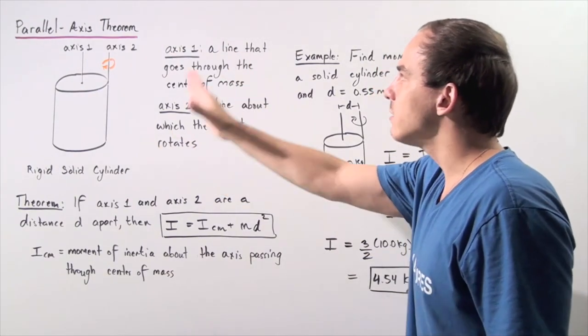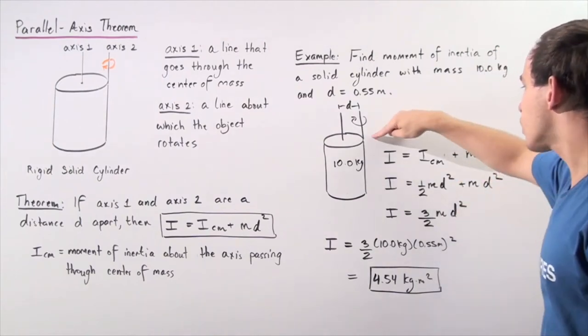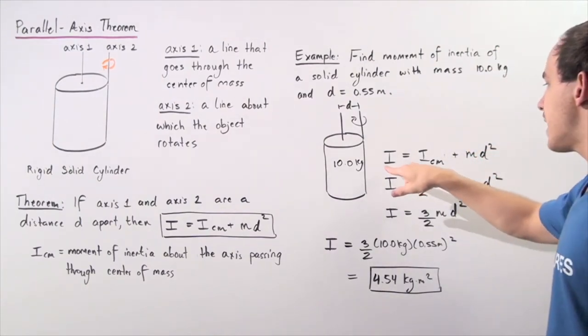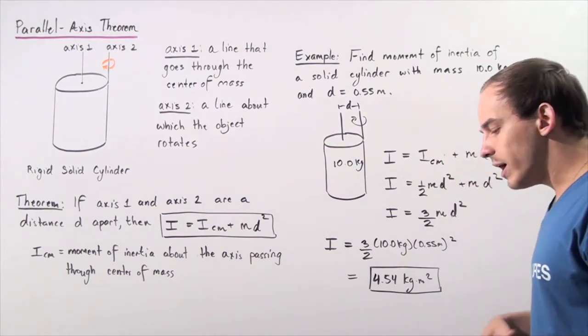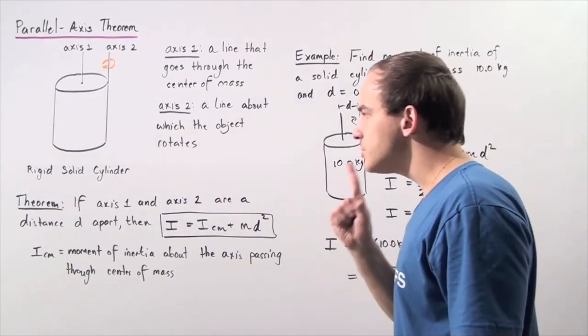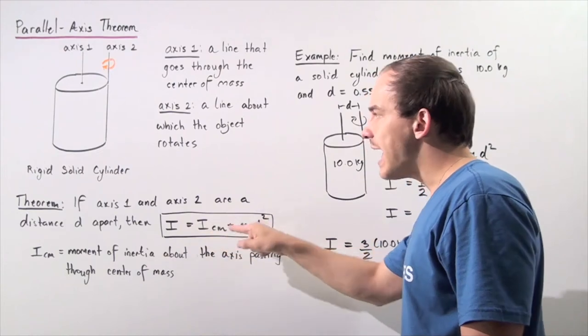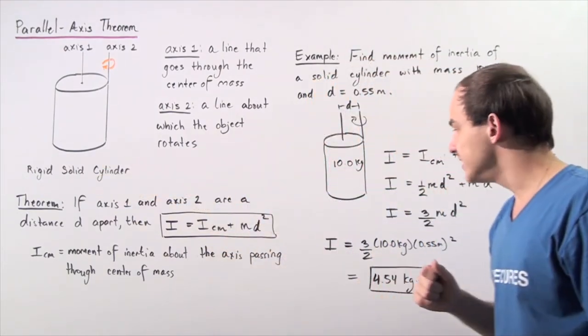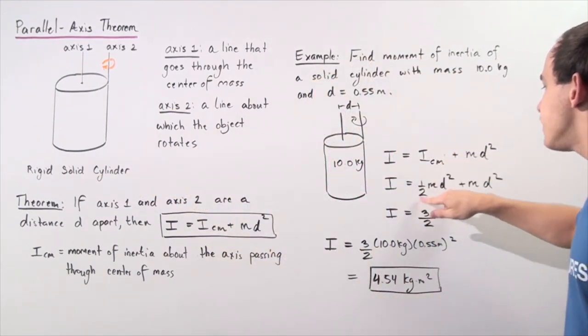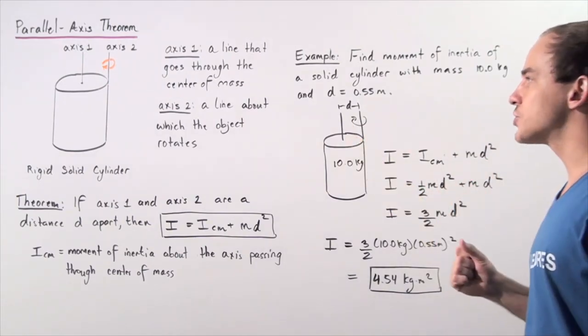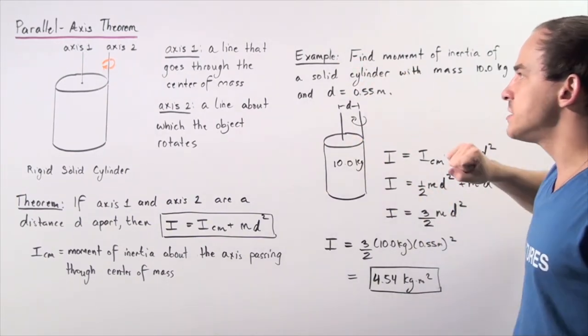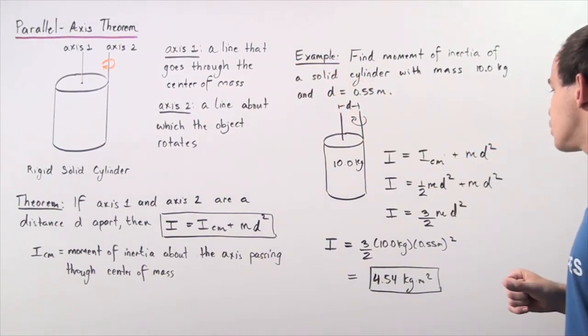We apply the parallel axis theorem. We write it in the following format: I equals I_CM plus m d squared. In a previous lecture, we saw that I_CM for a rigid solid cylinder was one half m d squared, where d is simply the radius of the circle and also the distance between axis one and axis two.